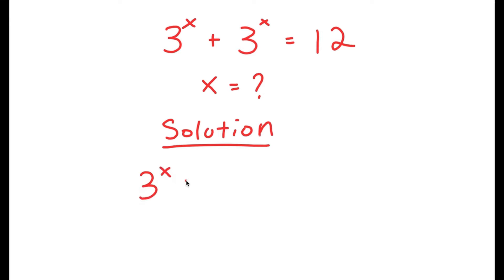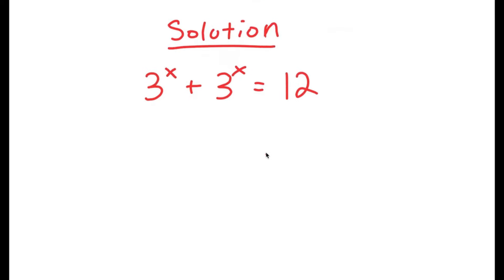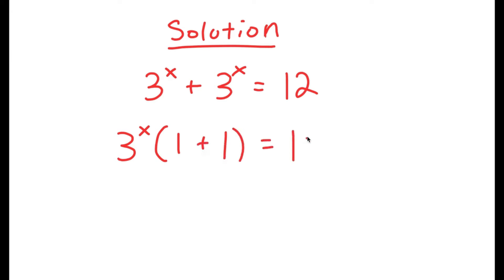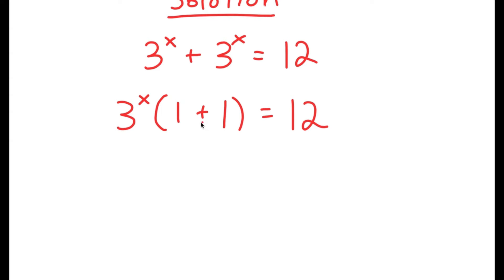So I have 3 to the power of x plus 3 to the power of x is equal to 12. What I'm first going to do is factor out 3 to the power of x, so I get 3 to the power of x times 1 plus 1 is equal to 12. Now 1 plus 1 is 2, so I get 3 to the power of x times 2 is equal to 12.